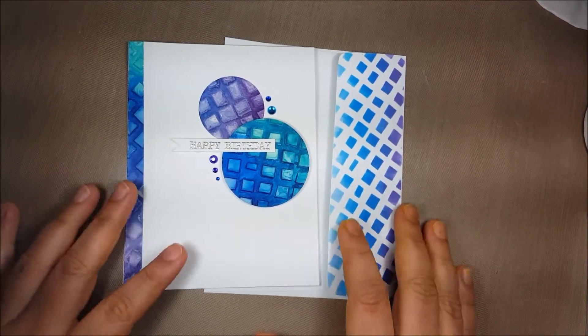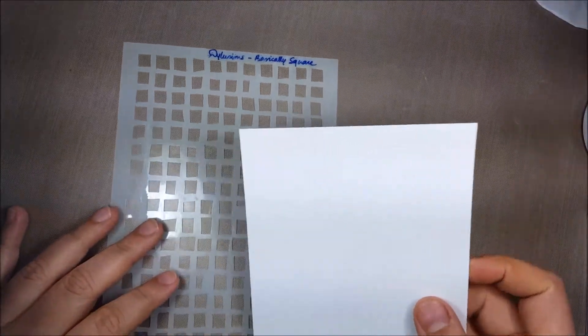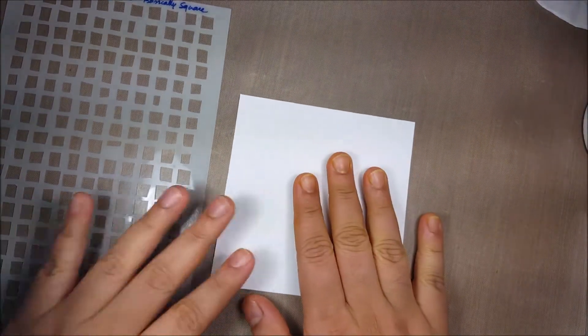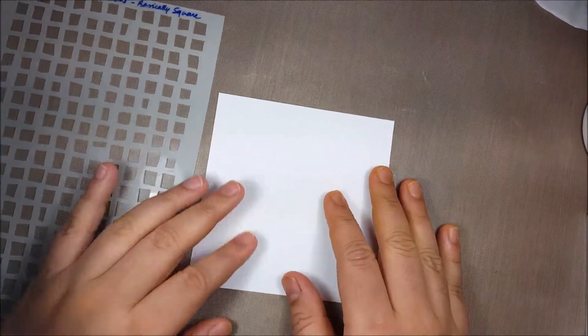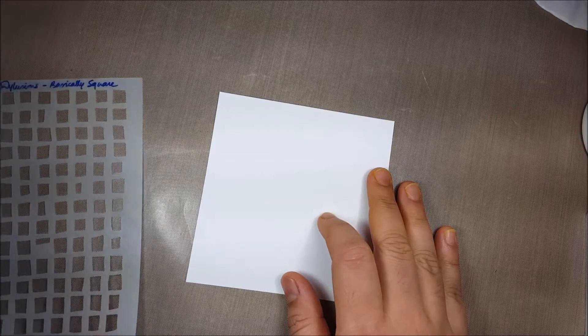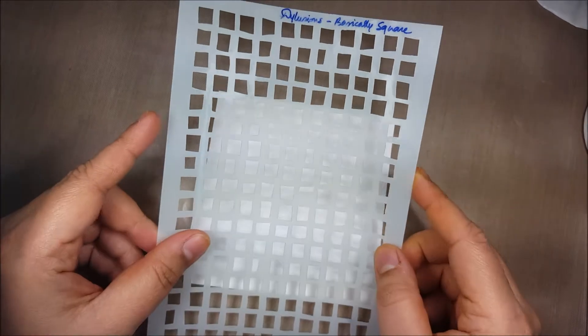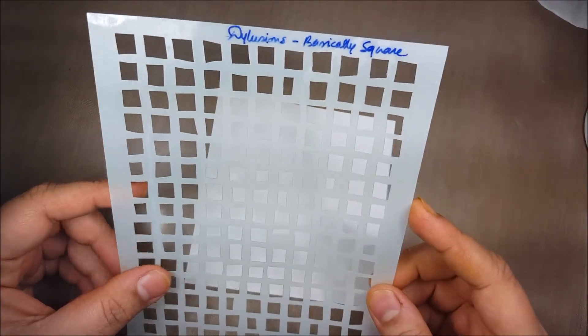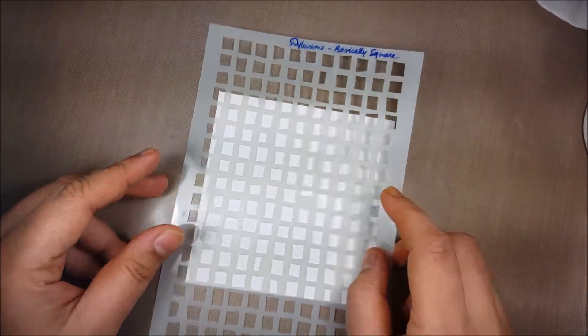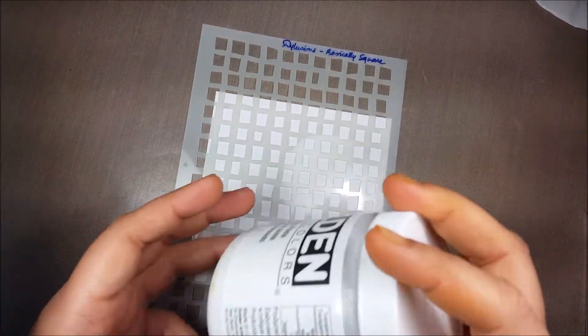Let's see how to do the background first. To do the background, you'll need some kind of cardstock. Here I'm using Strathmore Bristol smooth paper, and then you'll need a stencil. I'm using the Dyan Reaveley square stencil.